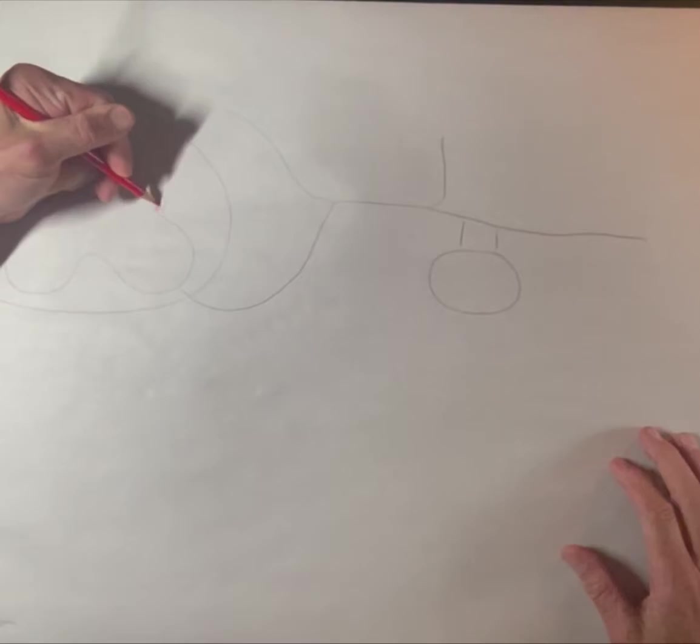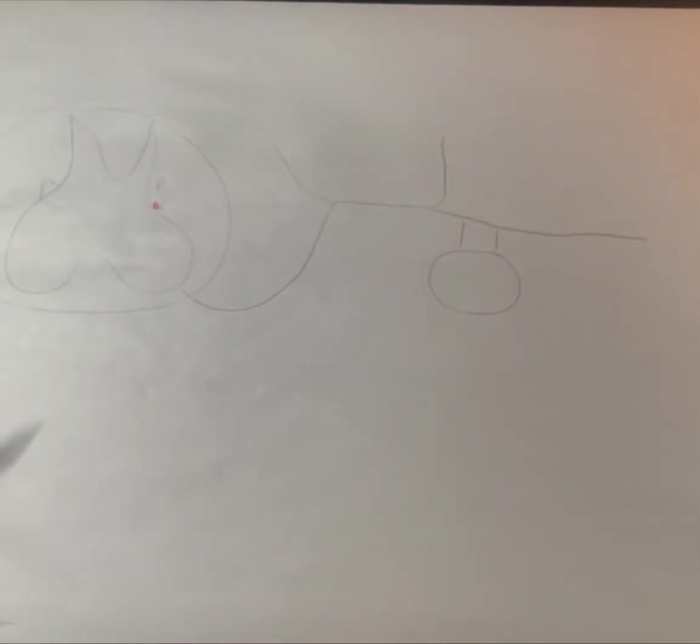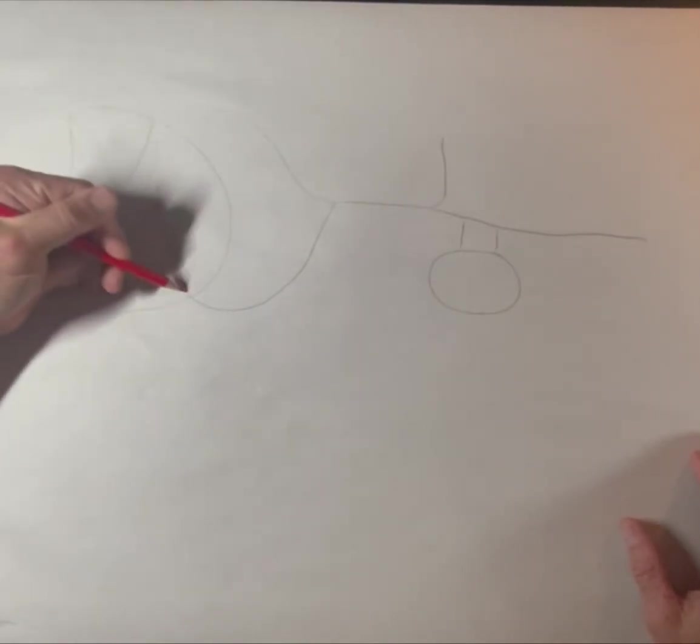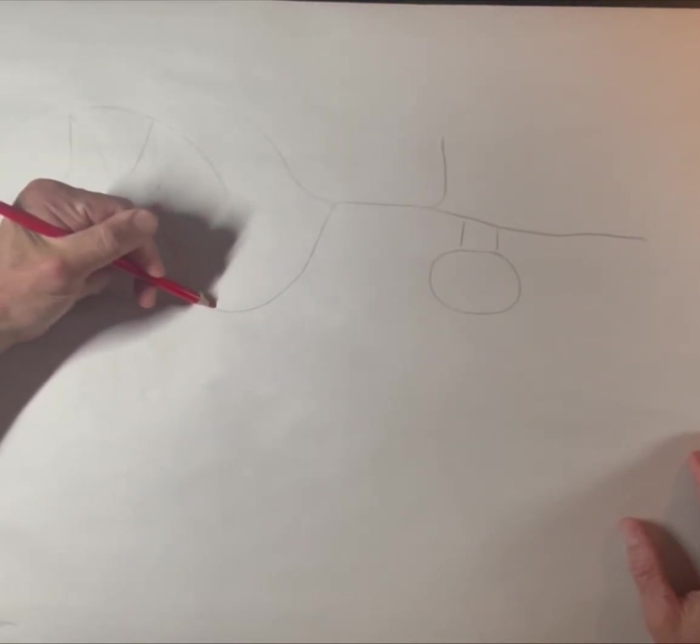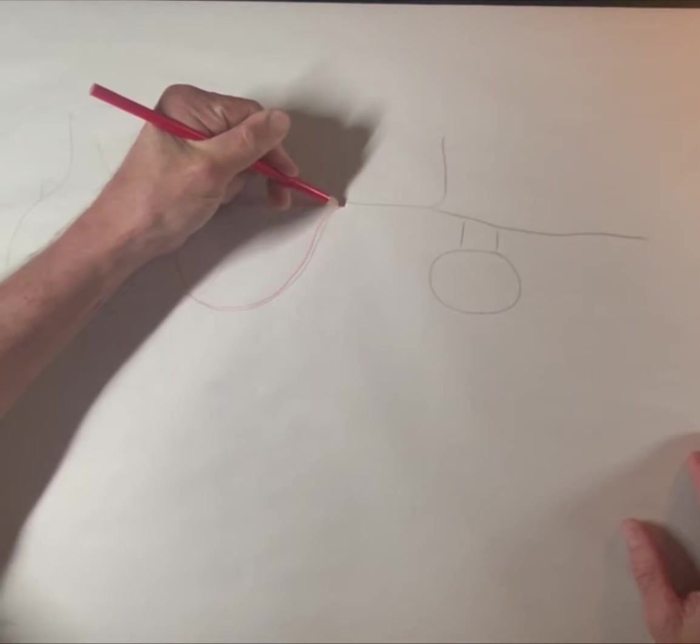So your first neuron, the preganglionic in the sympathetic pathway, is going to be here in the lateral horn. Its axon is going to head out this way. I don't care, just say lateral horn and then say ventral root. That's the next thing you need to say.